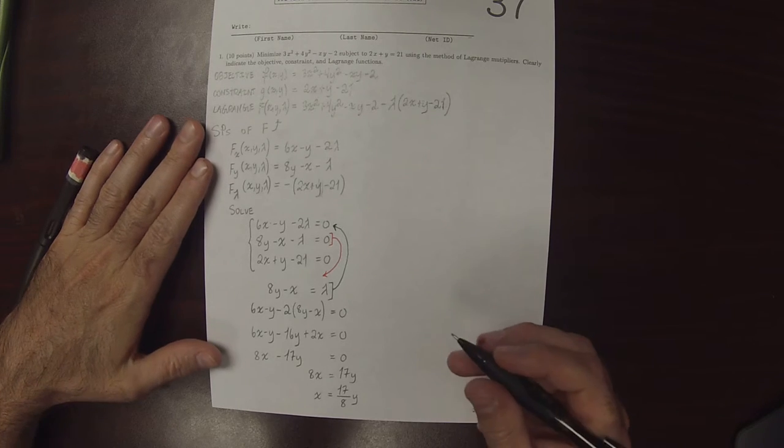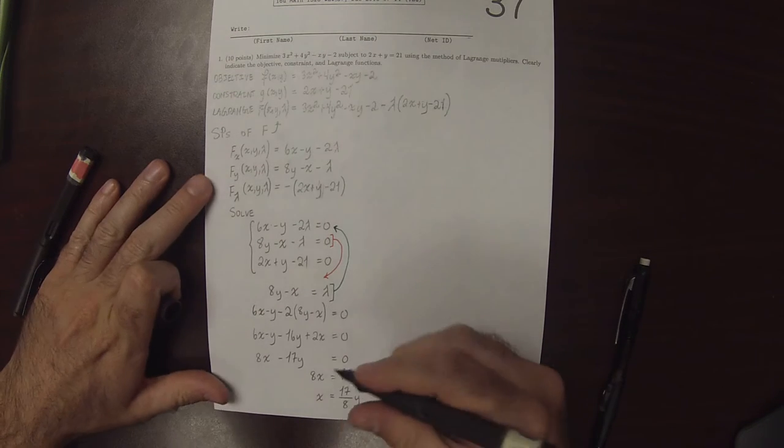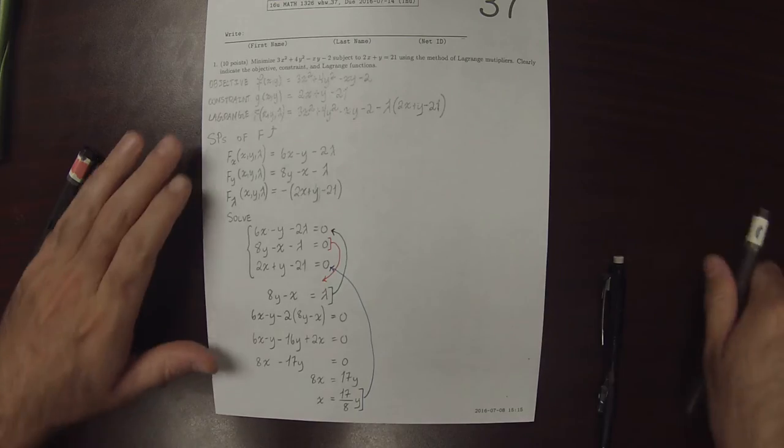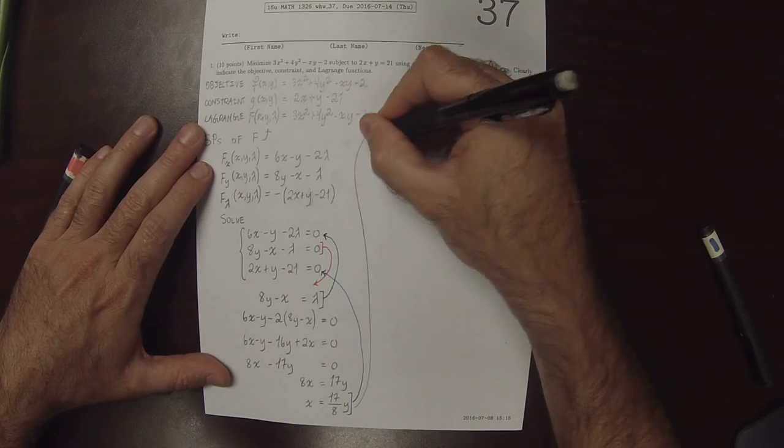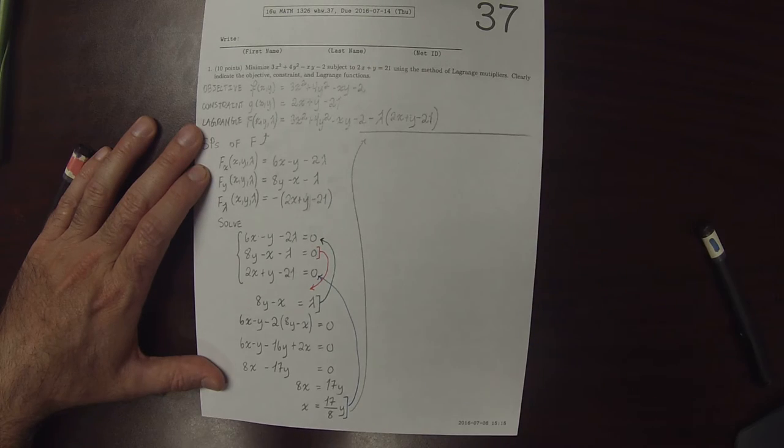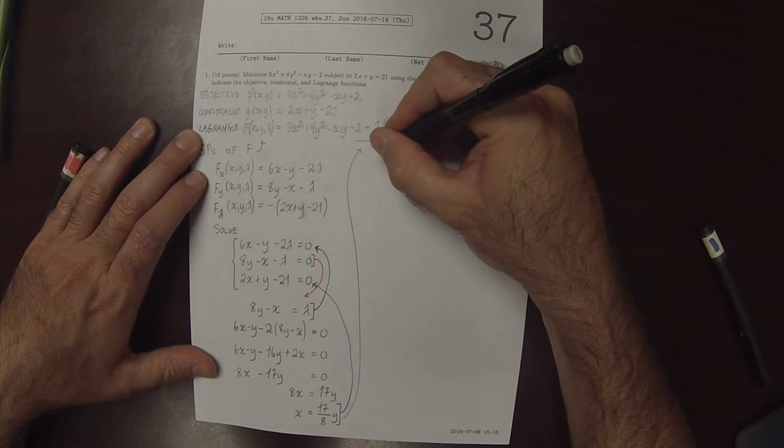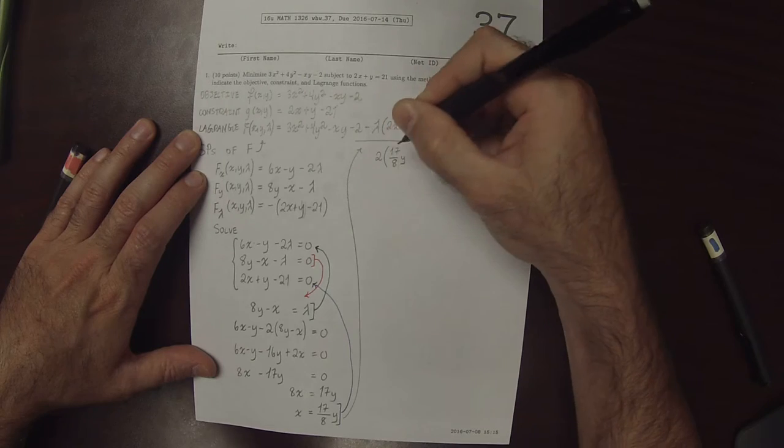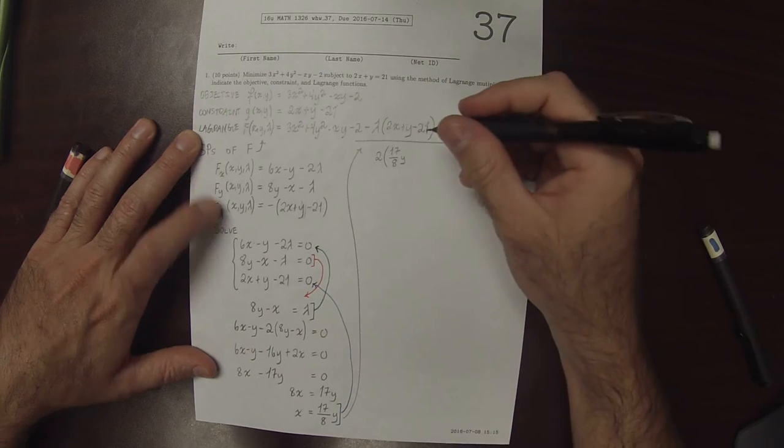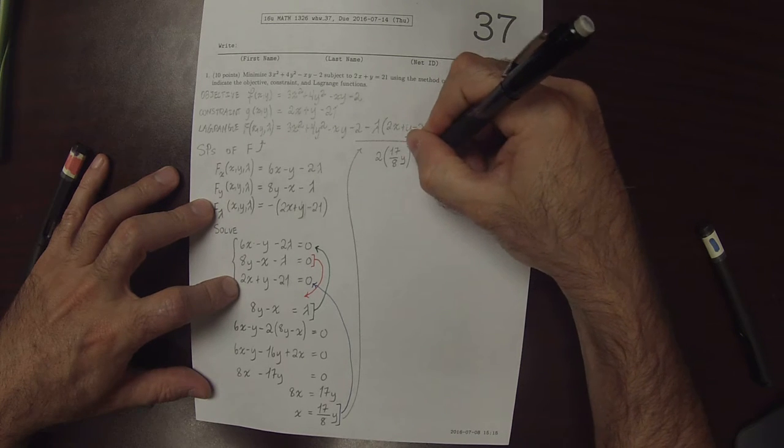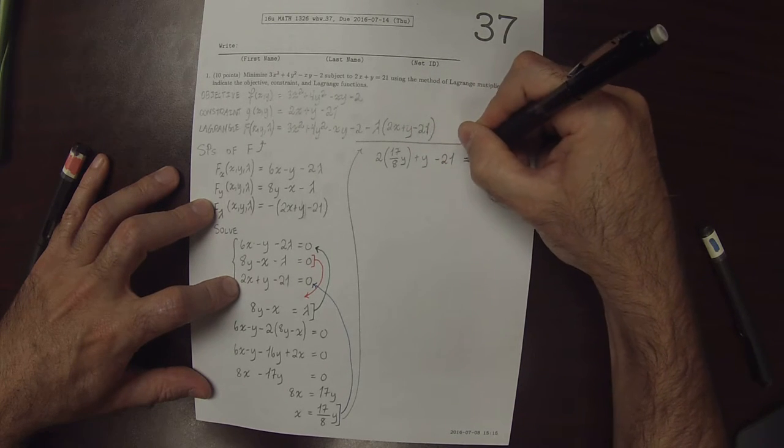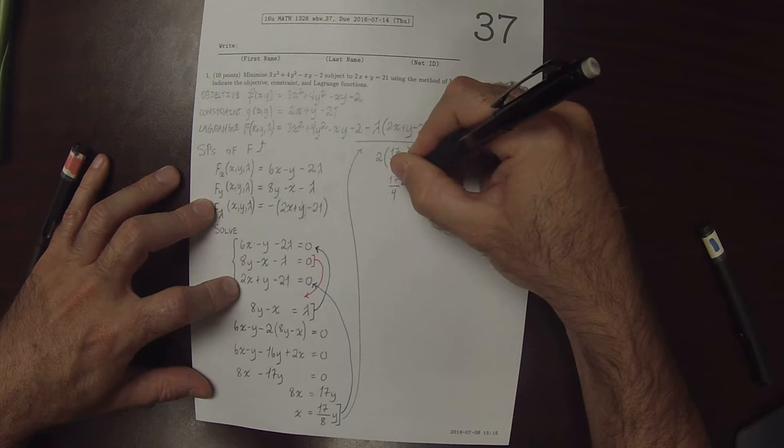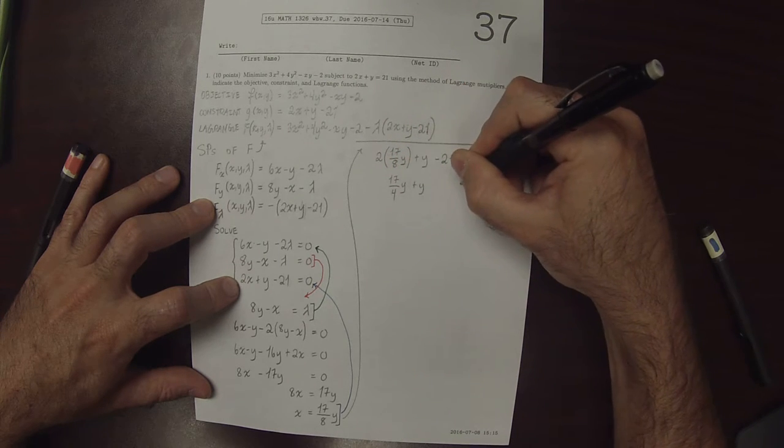So the numbers are just going to be weird. So we'll take this now and plug it into the last equation. To obtain that 2 multiplied by 17 over 8y plus y minus 21 is 0. So that would be 17 over 4y plus y is 21.